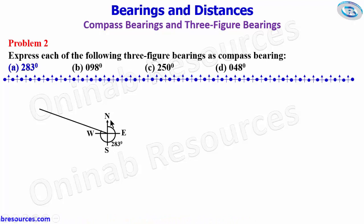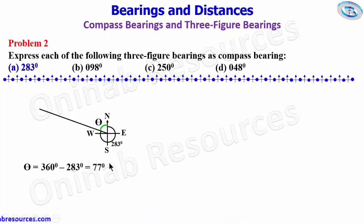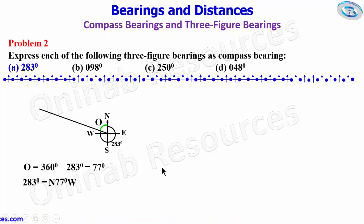To get the compass bearing equivalent of 283 degrees, we need this angle, which we call theta. Theta equals 360 degrees minus 283 degrees, which gives 77 degrees. So the compass bearing equivalent of 283 degrees is north 77 degrees west. Therefore, 283 degrees equals N77°W.